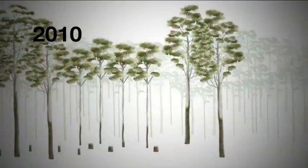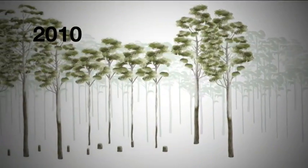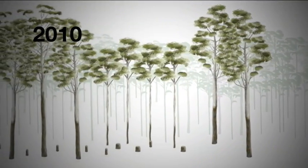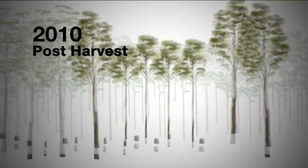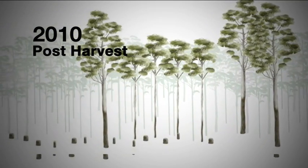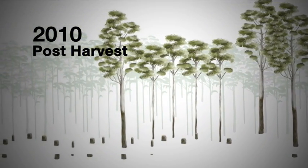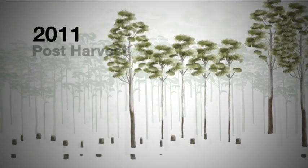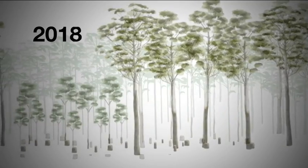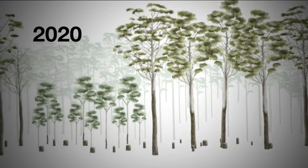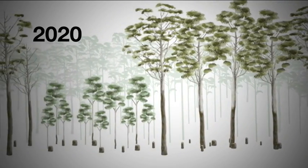This technique involves harvesting groups of mature trees, creating gaps in the canopy. This allows light to reach the forest floor and encourages regeneration and development of light demanding species such as blackbutt.